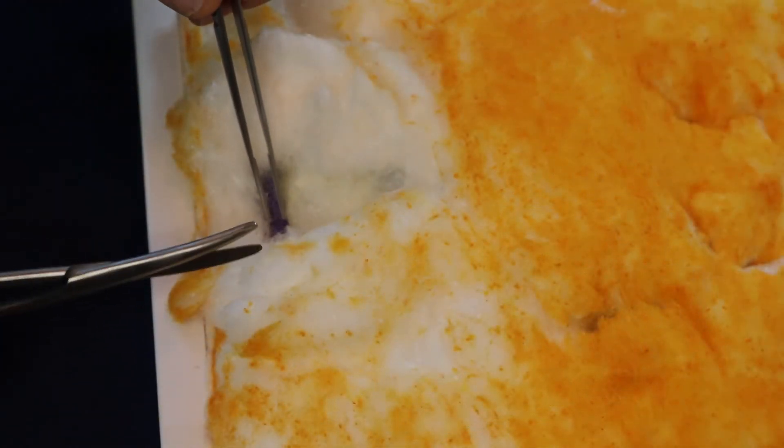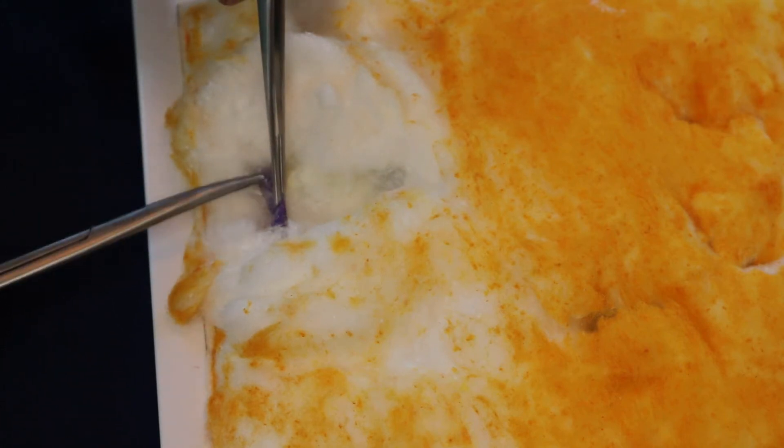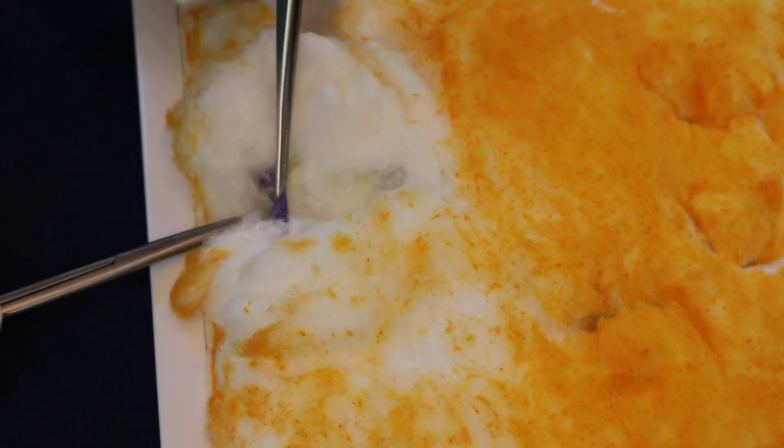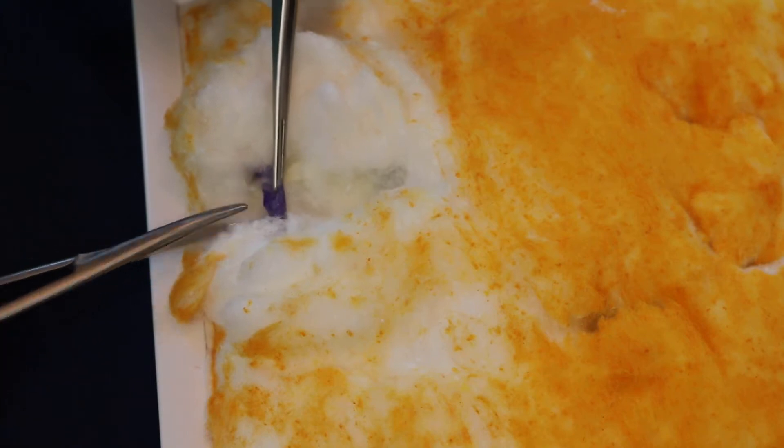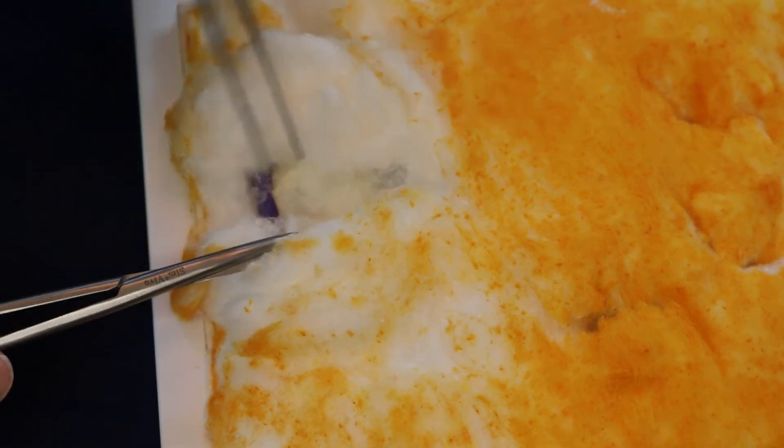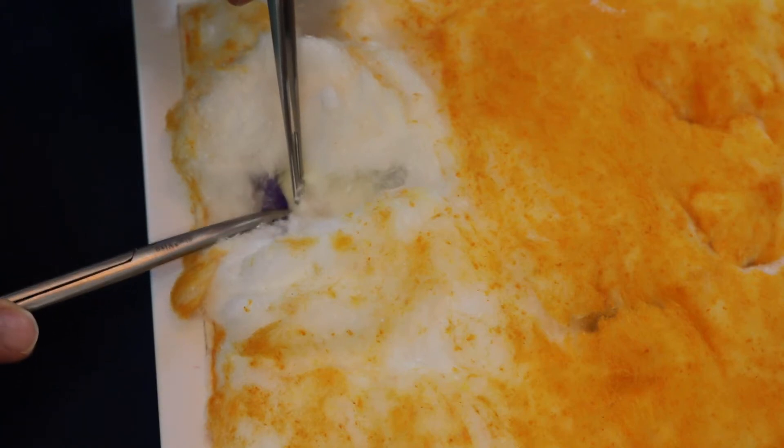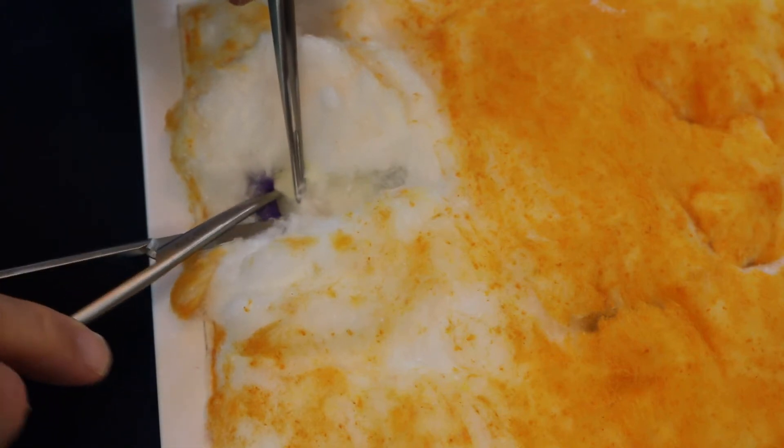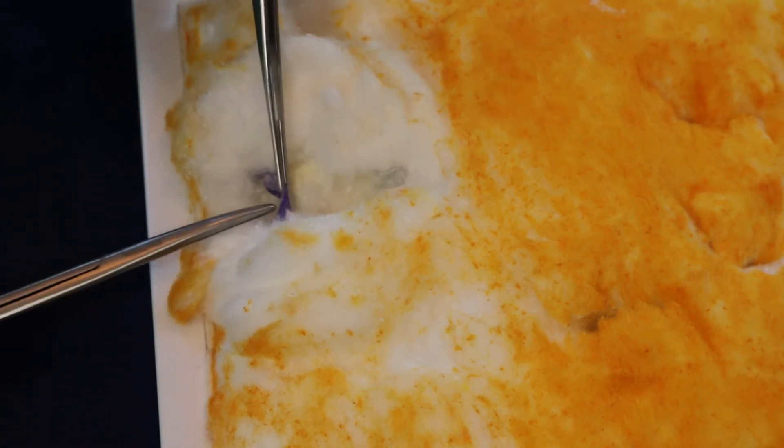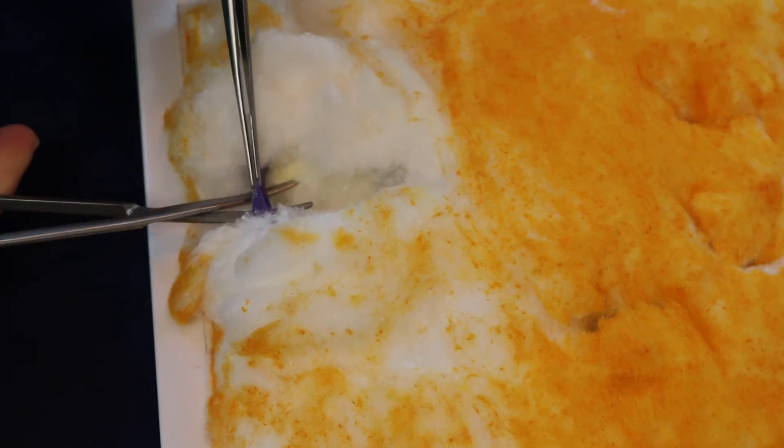Removal of the vein will require incising the fatty tissue over the entire length that is to be removed. This can be done in steps. Once the simulated vein has been identified, dissection should continue over the anterior surface for a period of several centimeters. The vein can then be retracted by gently grasping the surface and retracting it superiorly while the undersurface is dissected away from the surrounding tissue.